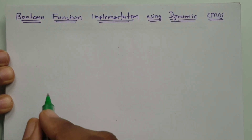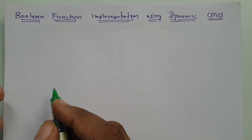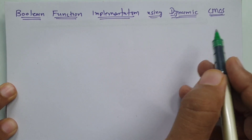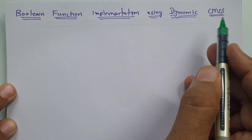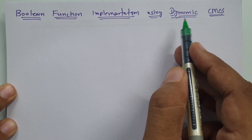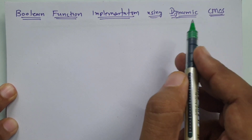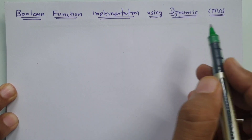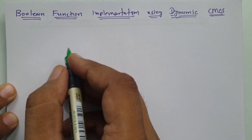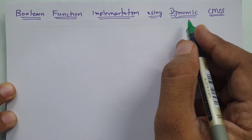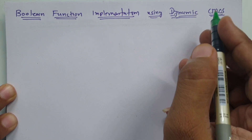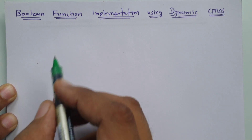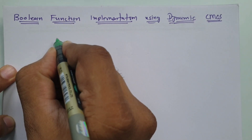Welcome to the VLSI lecture series. Professor Dolakia is going to explain Boolean function implementation using dynamic CMOS. In this video, we have already studied dynamic CMOS and its working in the previous video. Here in this session, we will implement Boolean functions using dynamic CMOS. One should know the basic structure of dynamic CMOS first, and then based on that basic structure we will implement the Boolean function.